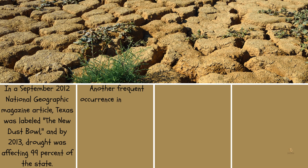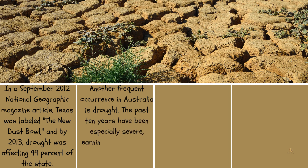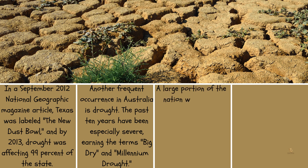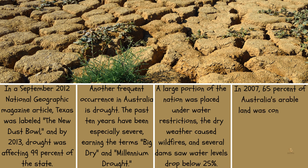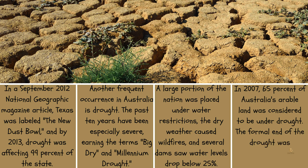Drought is another frequent occurrence in Australia. The past decade has been especially severe, earning the terms Big Dry and Millennium Drought. A large portion of the nation was placed under water restrictions, the dry weather caused wildfires, and several dams saw water levels drop below 25%. In 2007, 65% of Australia's arable land was considered to be under drought, and the formal end of the drought was announced in April 2012.